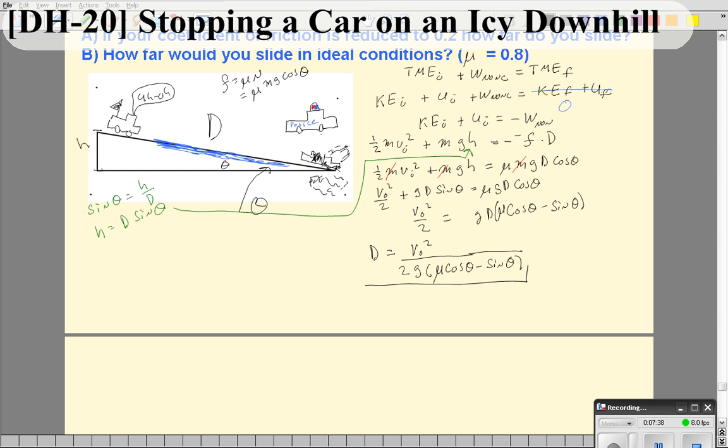This is the answer algebraically, but I gave you numbers. When we plug in the numbers, v was 20 meters per second, 2 times 9.8 meters per second squared times 0.2 times cosine of 10 degrees minus sine of 10 degrees. You put all that in and you get a pretty big number - you actually get 875 meters, which is just over half a mile. That's a really huge stopping distance, and the main reason is because you're going downhill and you have a small coefficient of friction.